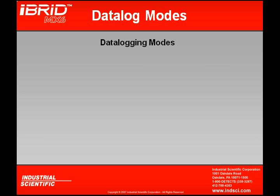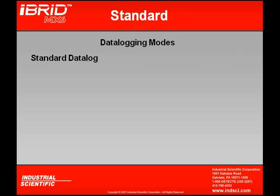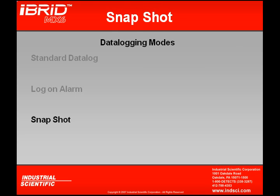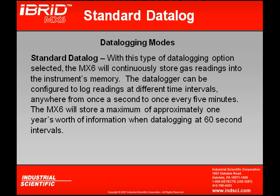Let's look at the different data logging modes available in the MX-6. We have Standard Data Log, Log on Alarm, and Snapshot. In standard data logging mode, the MX-6 will continuously store gas readings into the instrument's memory. The data logger can be configured to log readings at different time intervals anywhere from once a second all the way up to once every five minutes. The MX-6 will store a maximum of approximately one year's worth of information when the data logger is at 60-second intervals.